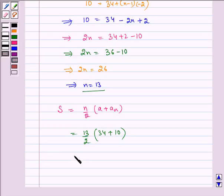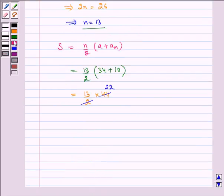Now solving this we get, which is equal to 13 by 2 multiplied by 44. Here we see that this gets cancelled by this, by 22. So it is equal to 286.